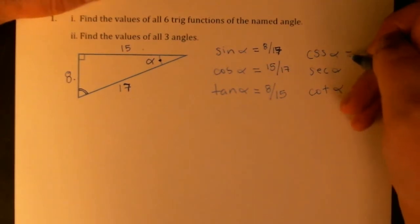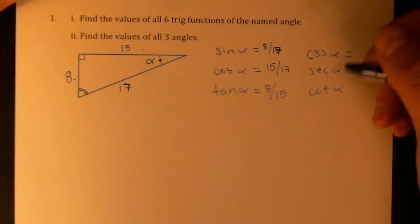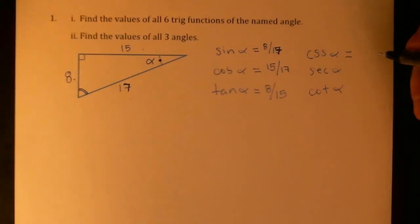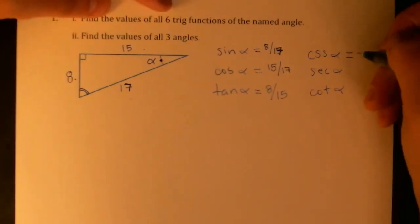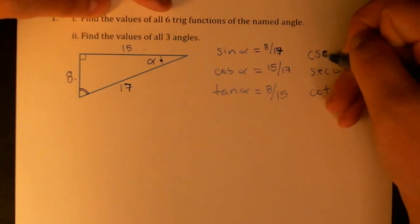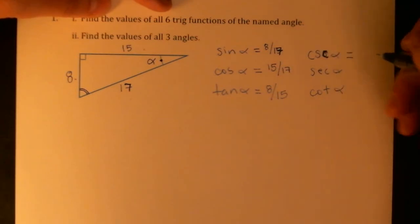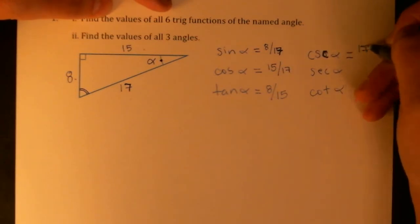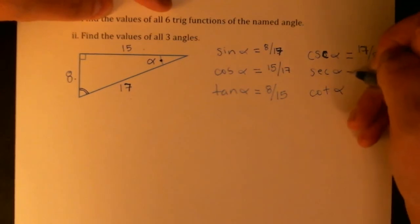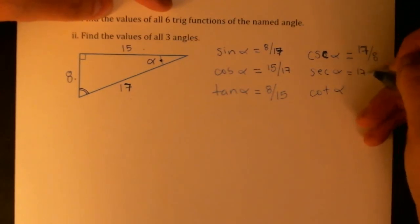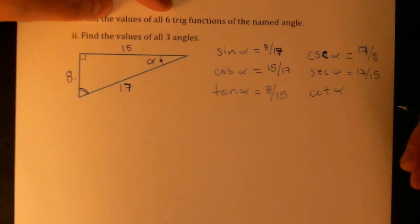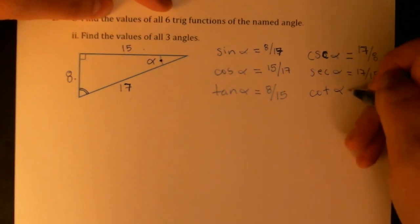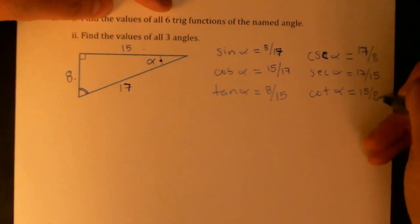And then again, I hope if you remember your reciprocal identities, the rest are really easy. Sine, cosine, and tangent are the big ones. Cosecant is the reciprocal of sine, so it's going to be 17 over 8. Secant is the reciprocal of cosine, which will be 17 over 15. And cotangent is the reciprocal of tangent, which will be 15 over 8.